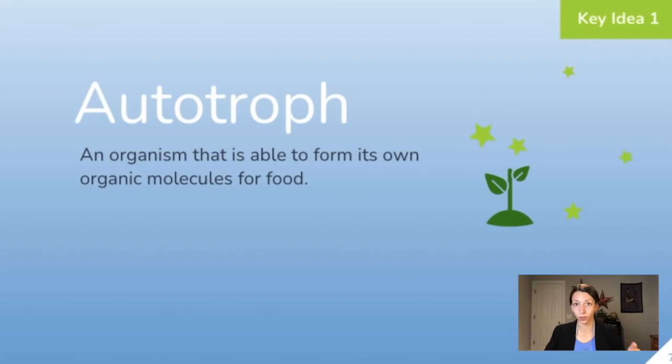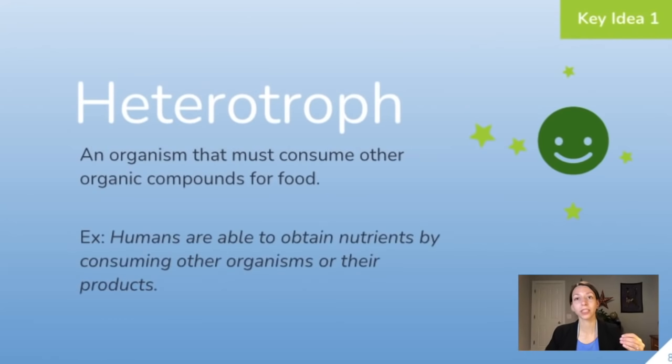Important word here is an autotroph, also known as a producer, but these are organisms that can make their own food or are able to form their own organic molecules for food. Plants are autotrophic. Heterotrophs are organisms that must consume other organic compounds for food, and that means consuming other organisms. Heterotrophs are consumers. For example, humans are able to obtain nutrients by consuming other organisms or the products of other organisms.